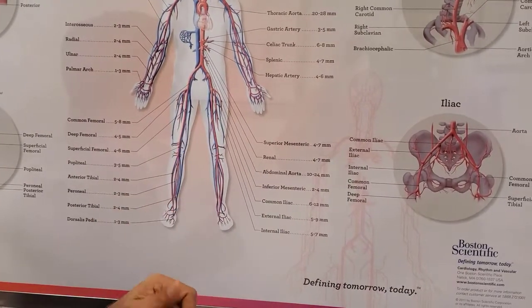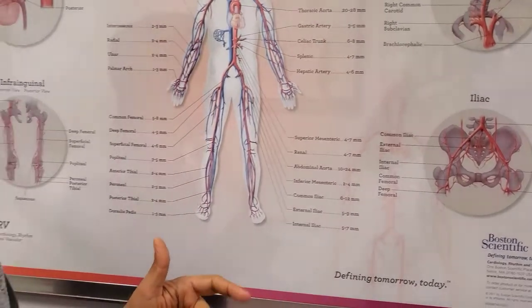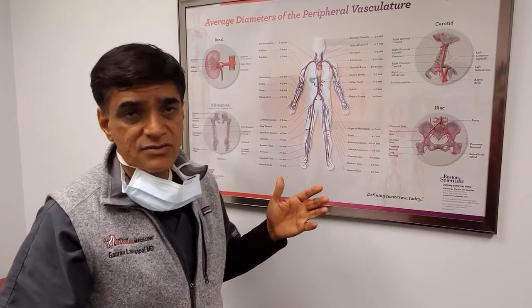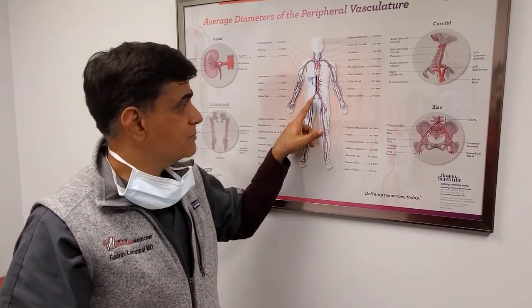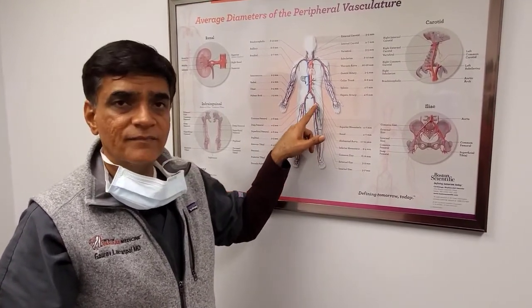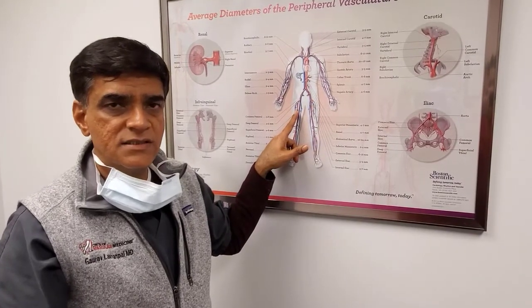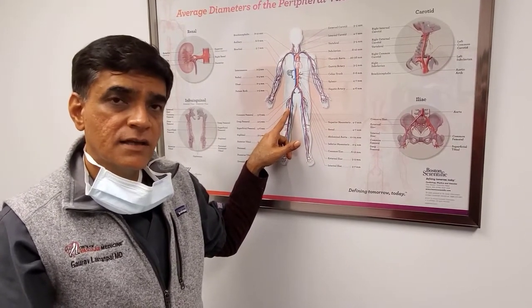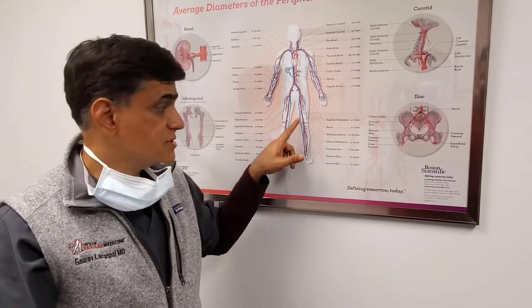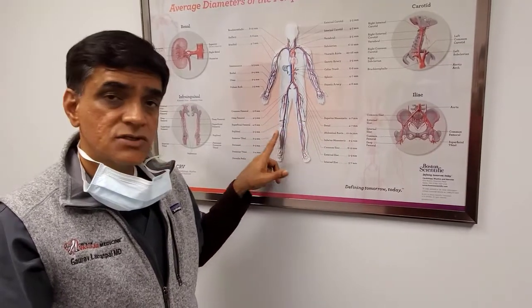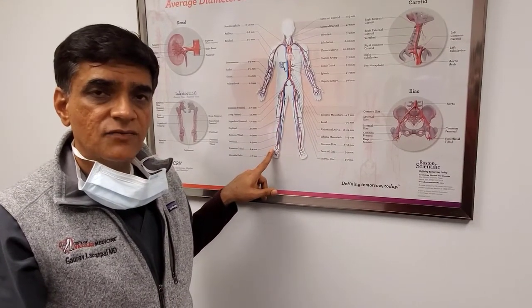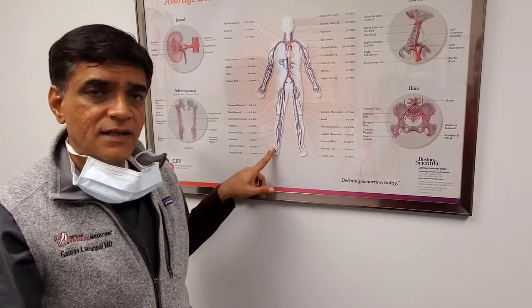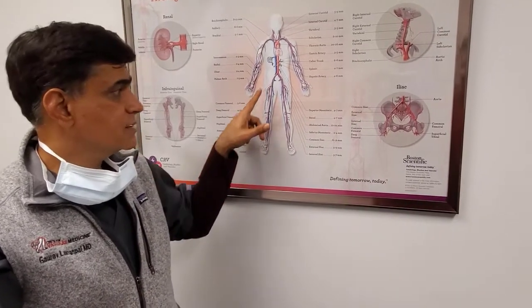People who are smokers, who are diabetics, who have high blood pressure, who have high cholesterol, who have family history, can develop blockages in this circulation. And the end point of these blockages, if they're not attended to in a timely manner, can be amputation — because if the tissue downstream does not get enough oxygenated blood, it can develop gangrene and the next step is amputation.